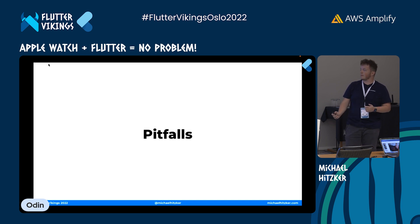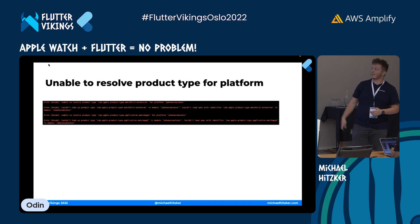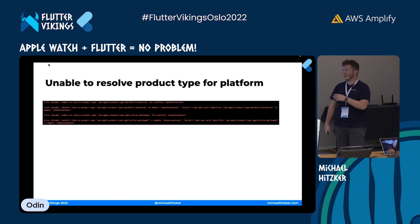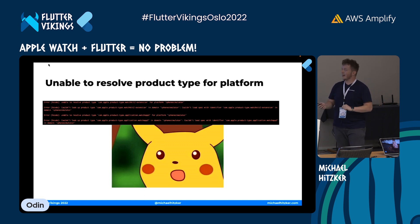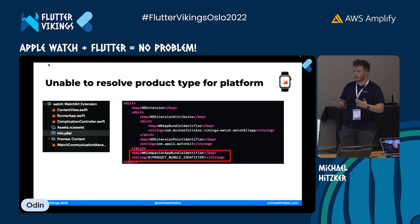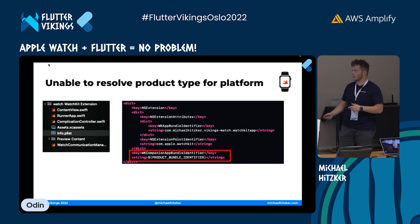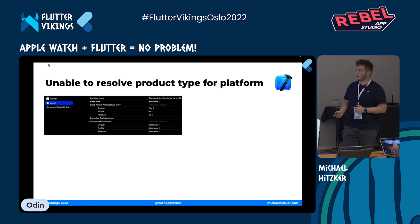I also experienced some pitfalls when adding the watch target. You add the watch target, you want to run it, and you expect it to work great — but it doesn't. I got a red horrifying error. After some googling I found the fix: add the WCCompanionAppBundleIdentifier to your watch extension's Info.plist. This just tells Flutter that a companion app is available. That fixes it for development mode.